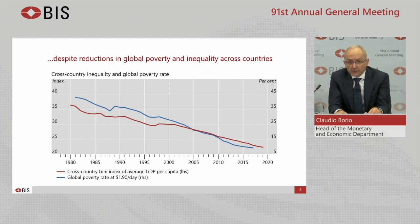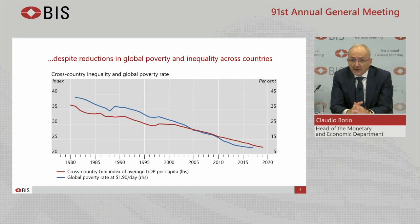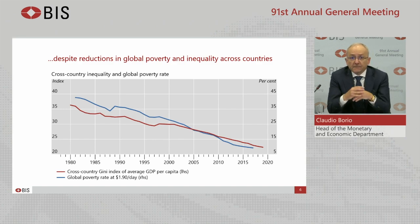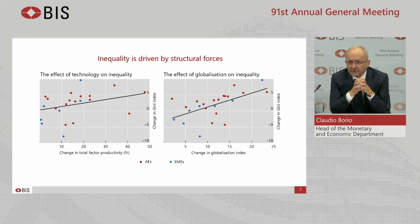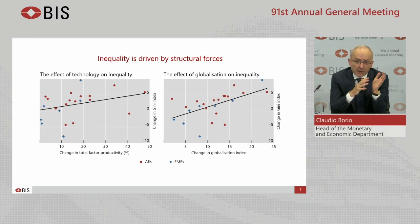Longer term structural developments necessarily have structural causes. Two highlighted in this context are technology and globalization. Technology is thought to have raised inequality by increasing the demand for the skilled relative to the unskilled. And globalization by displacing workers who lose their comparative advantage. This simple graph is consistent with the hypothesis. Over long periods, there is a clear correlation across countries between measures of inequality on the one hand, and technology, left panel, and globalization, right panel, on the other.